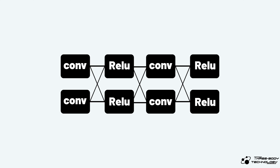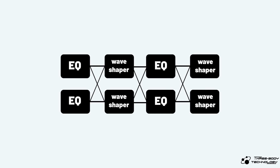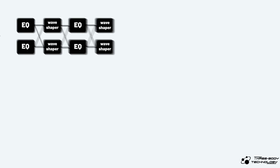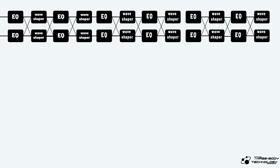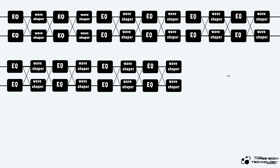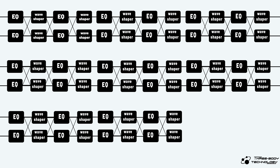A typical neural network might look something like this. Don't be intimidated. Since we're talking about audio, we'll transform this network into the audio dimension. Suddenly, it all makes sense, doesn't it? A network that processes audio is essentially a symphony of countless layers of EQs and wave shapers. Hundreds or even thousands of such layers enable a neural network to simulate almost everything we want.